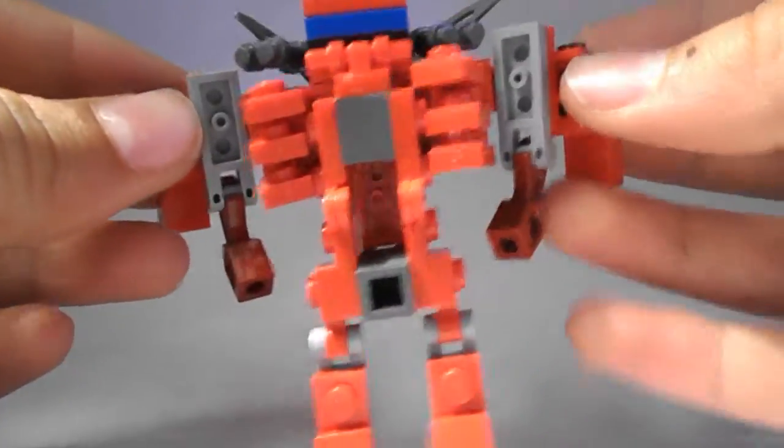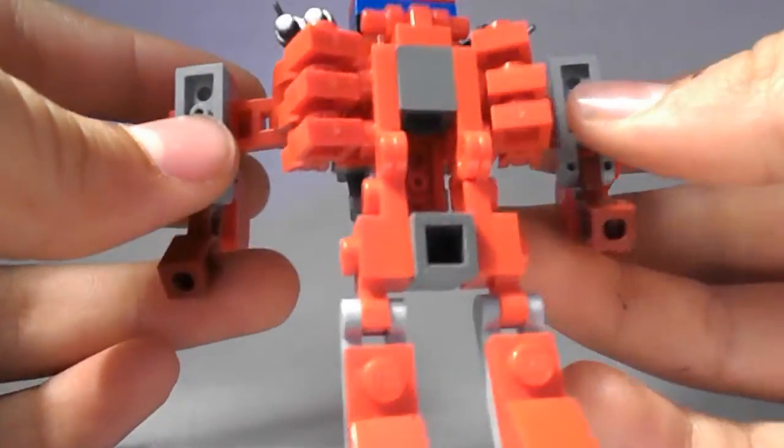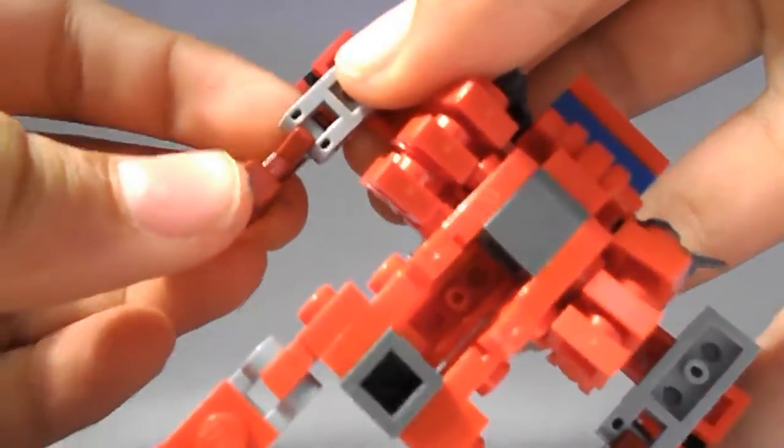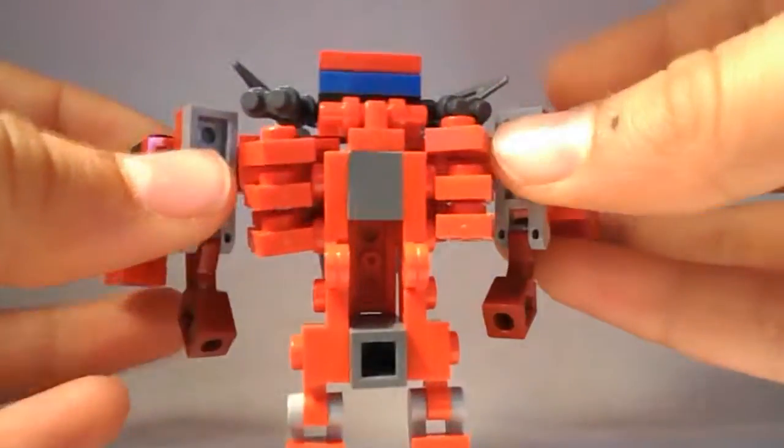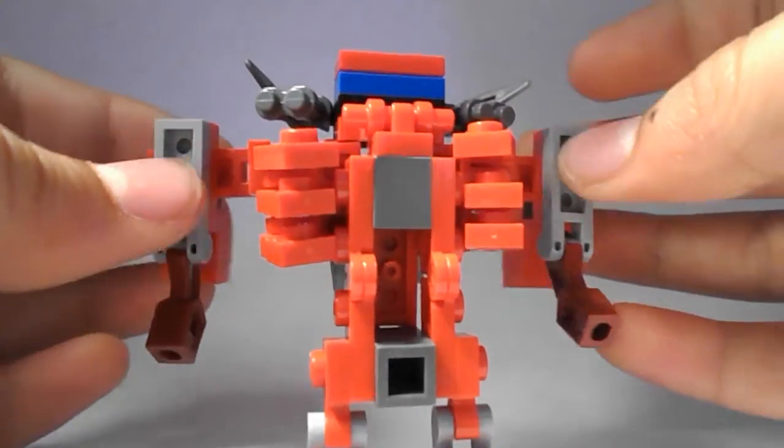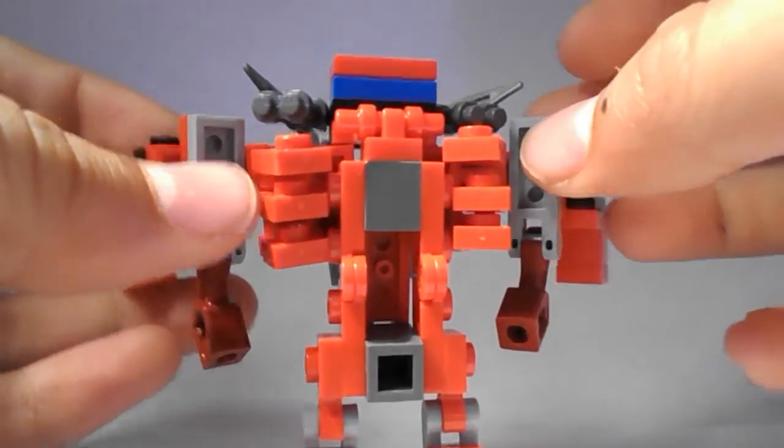And he has his shoulder cannons. Yeah, he doesn't have too much articulation. It's really just outward and inward movement on the arms, on the elbow, inward and outward on the shoulders.